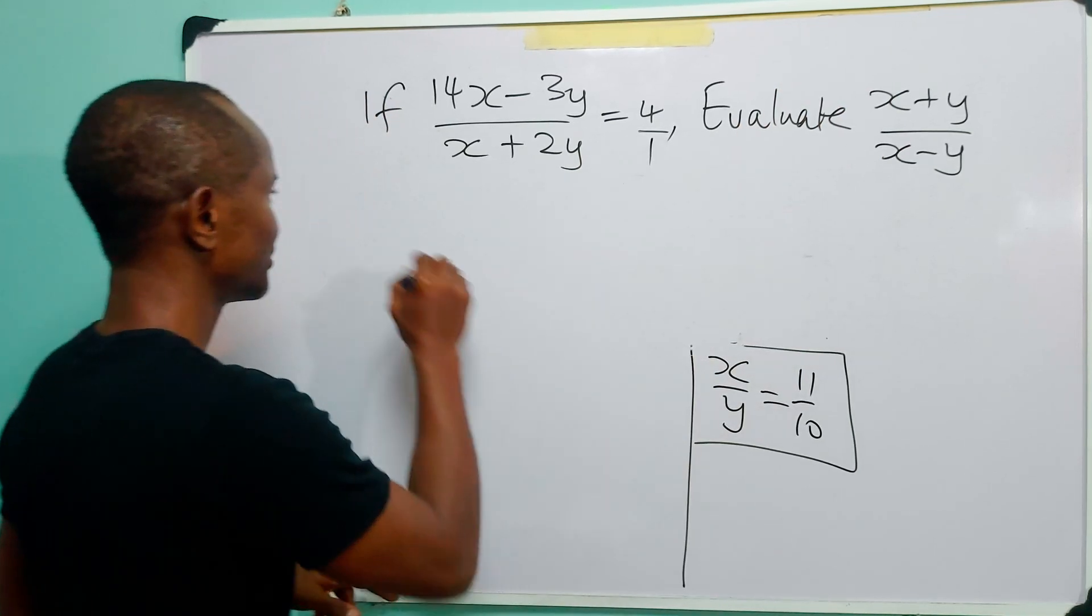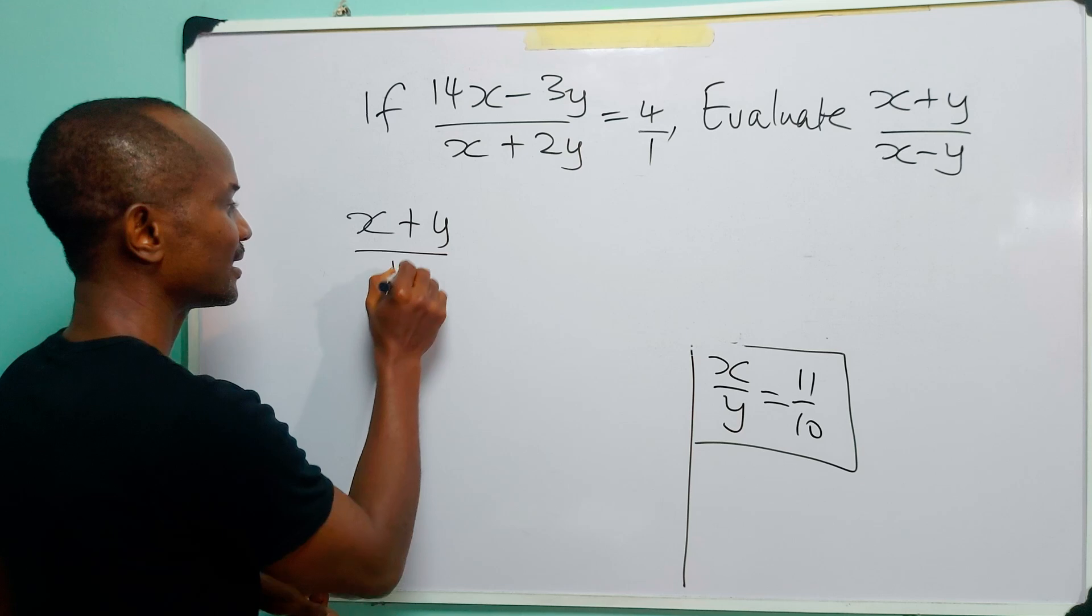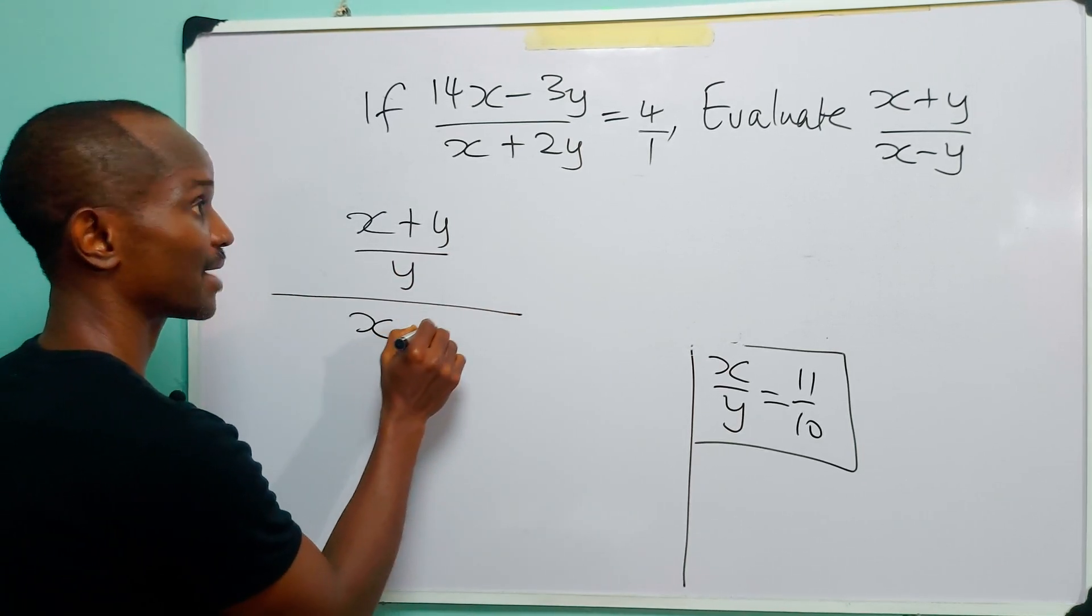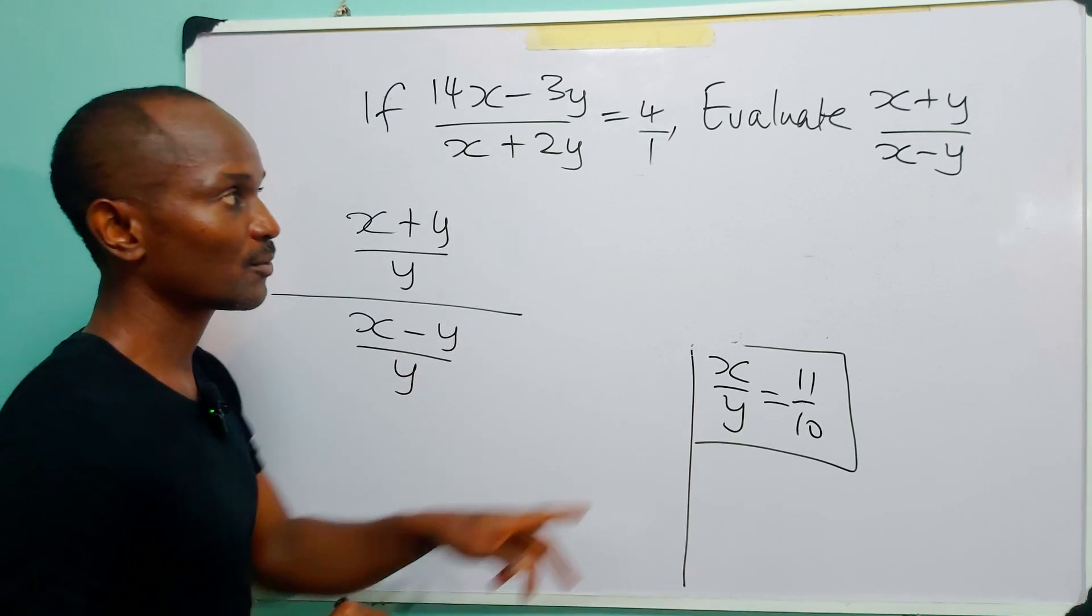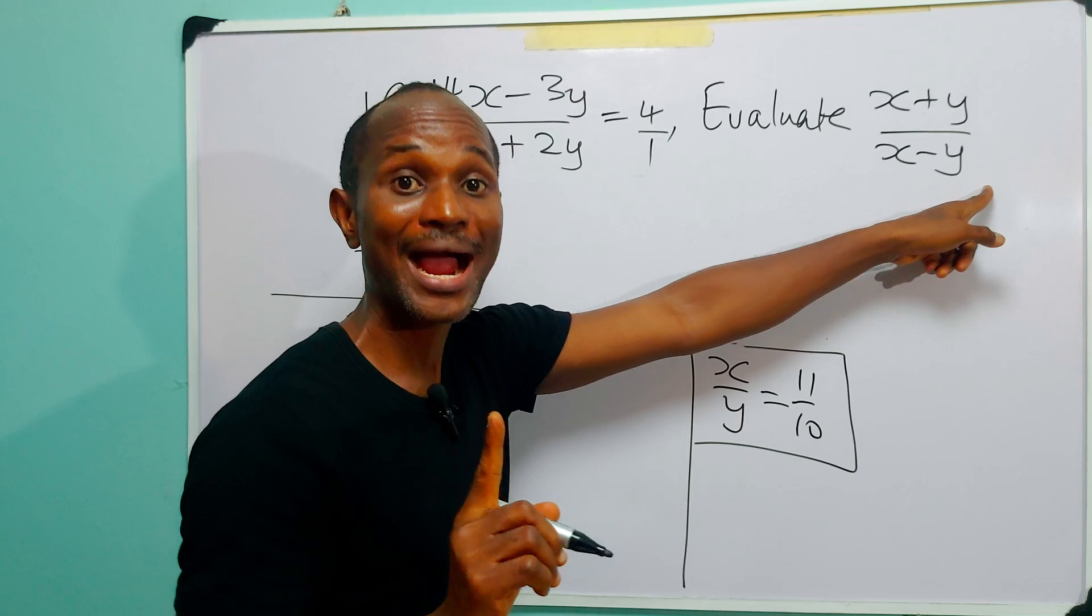And you do (x + y) divided by y over (x - y) divided by y. In other words, you divide both sides of this equation by y. In other words, you divide both the numerator and the denominator by y.